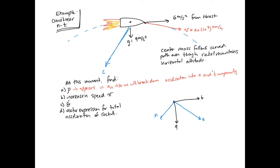We have two values, 9 and 6, that we need to project onto our coordinate system. There's a 15-degree angle here. To project the value of 6 into normal and tangential components, I draw another line, forming a right-angled triangle where the hypotenuse is 6, the adjacent side is the tangential component, and the opposite side is the normal component.